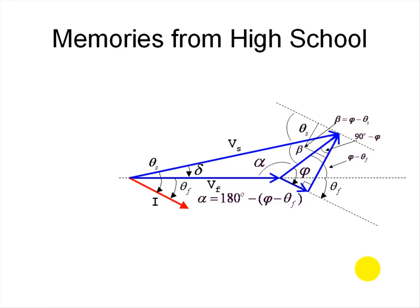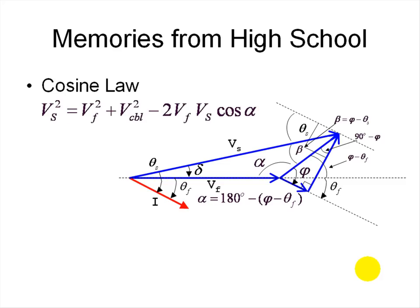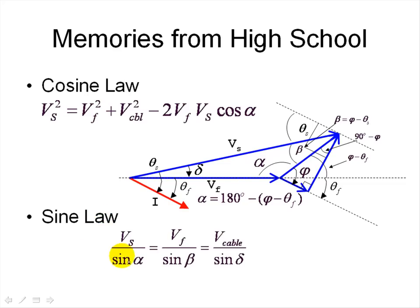We recall high school trigonometry. Using the cosine law applied to the power system triangle, we can write it three different ways — for example, written for alpha. We also recall the sine law, which summarizes the relationship between angles and voltages in the power system triangle.